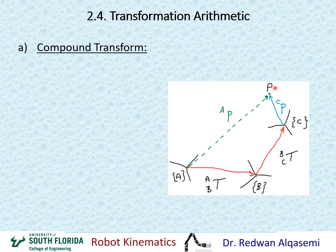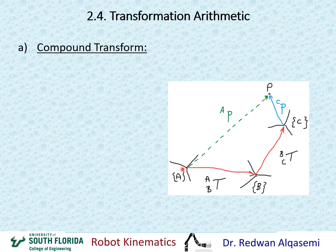We have a point P defined relative to frame C — that blue line vector is the vector of point P relative to frame C. What we need to find is the definition of P relative to frame A. There are multiple transformations along the way, so how do we deal with that?